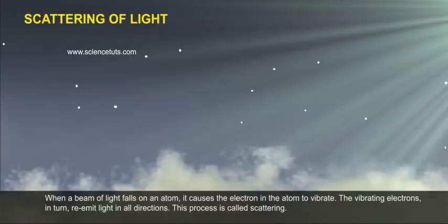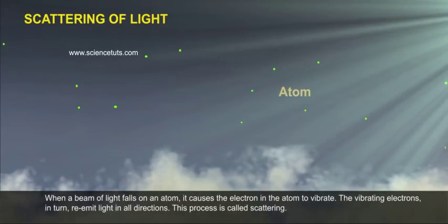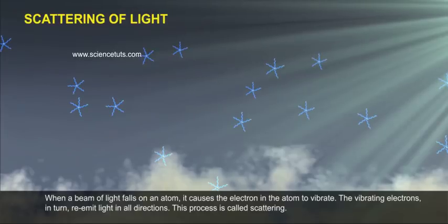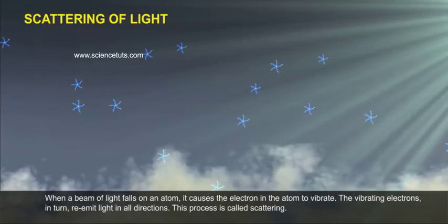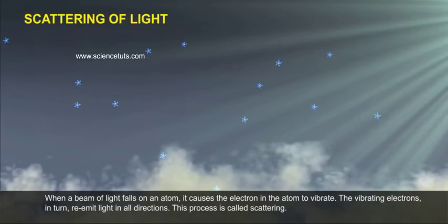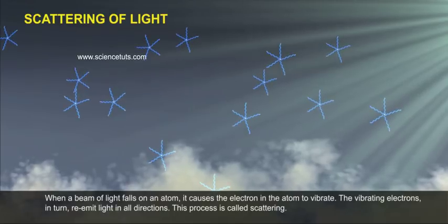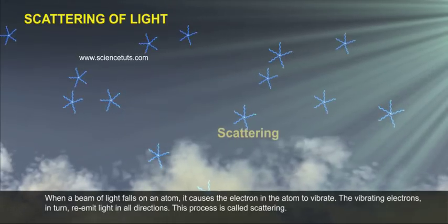When a beam of light falls on an atom, it causes the electron in the atom to vibrate. The vibrating electrons in turn re-emit light in all directions. This process is called scattering.